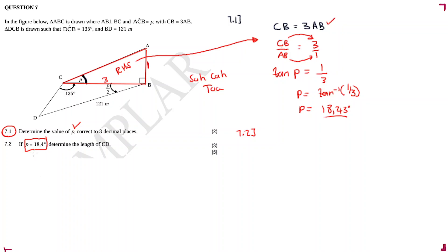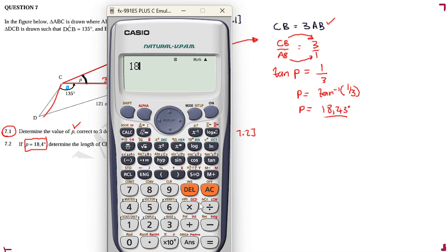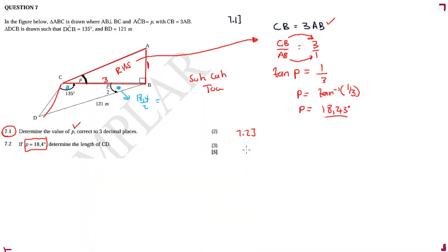Sometimes they give away the answer from a previous part in the next question — look out for such things. Now for the next part, if P equals 18.43, we need to determine the length CD. For this we also need this angle, which is 18.43 divided by 2, giving us 9.2 degrees.